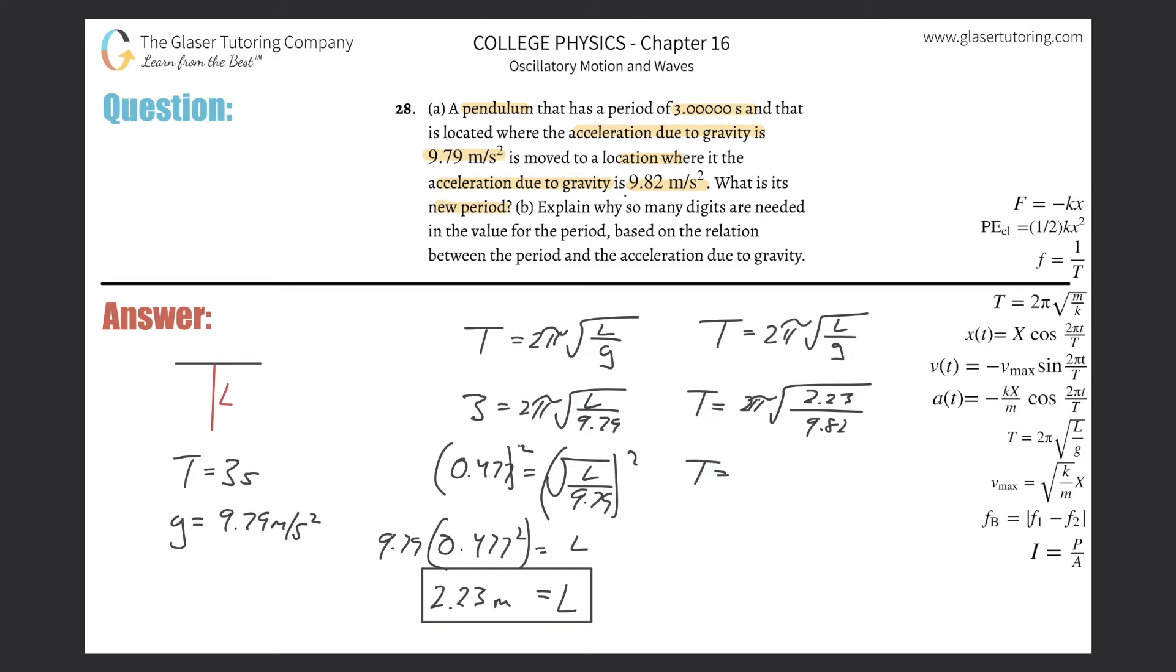And we get about 2.99. 2.995, 5, 4, 1. If I were to, though, consider significant figures, I cannot have more than three because the 9.82.